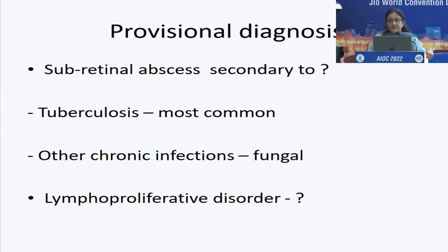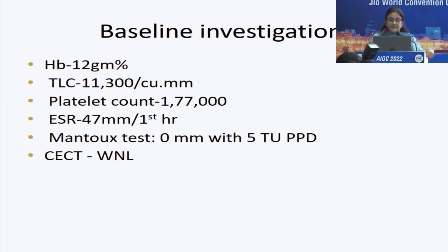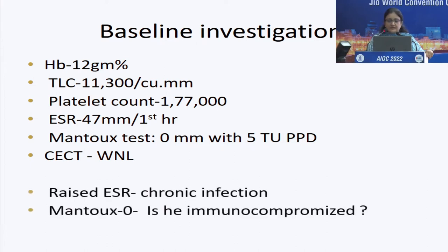On FFA, there was mottled hyperfluorescence within the area of the lesion. The provisional diagnosis was a subretinal abscess secondary to most commonly tuberculosis, or some other chronic infection like fungal infection, or a lymphoproliferative disorder. On baseline investigations, everything else was not really suggestive of any infection except the Mantoux was zero — which you don't expect in a young child.